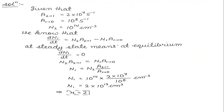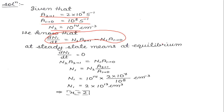For equilibrium, the important equation is: dN₁/dt = N₂·A₂₁ − N₁·A₁₀. At steady state, dN₁/dt = 0, so N₂·A₂₁ = N₁·A₁₀. Substituting the given values: N₁ = N₂·A₂₁ / A₁₀ = (10¹⁴ × 2×10⁷) / 10⁸ = 2×10¹³ cm⁻³. Therefore x = 2.